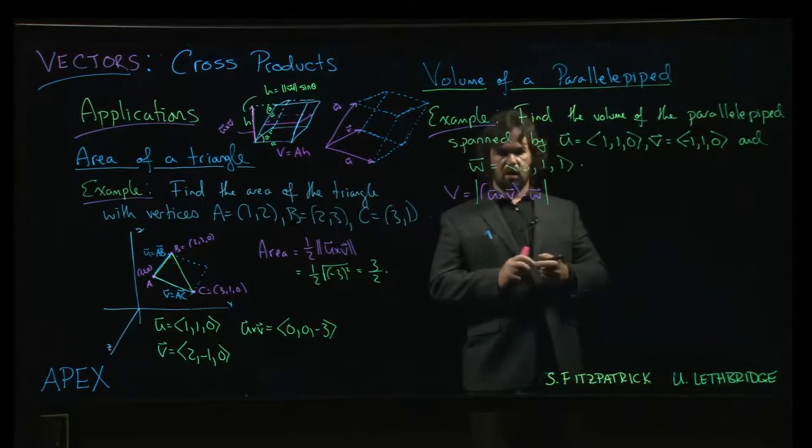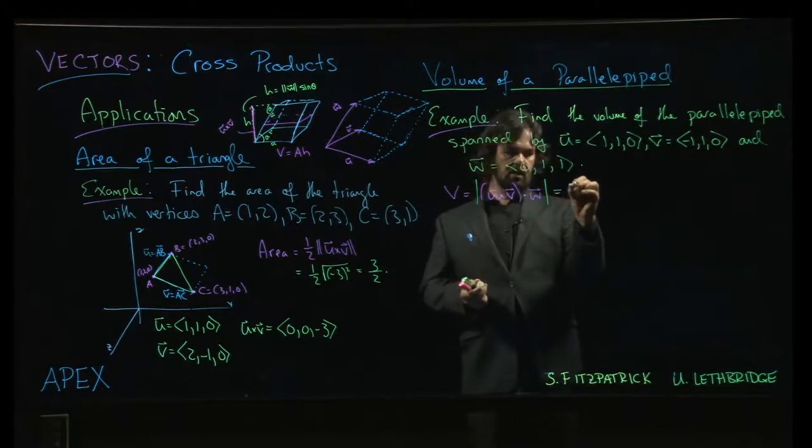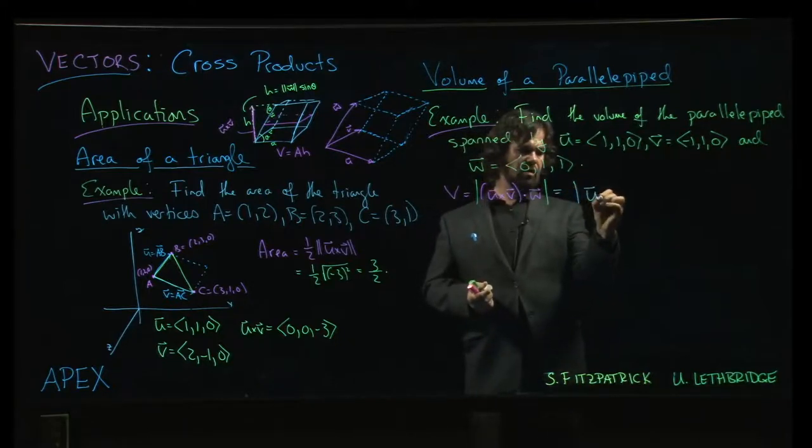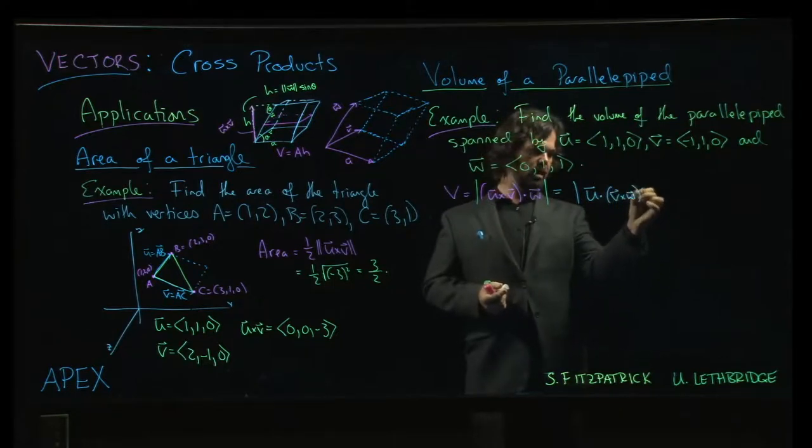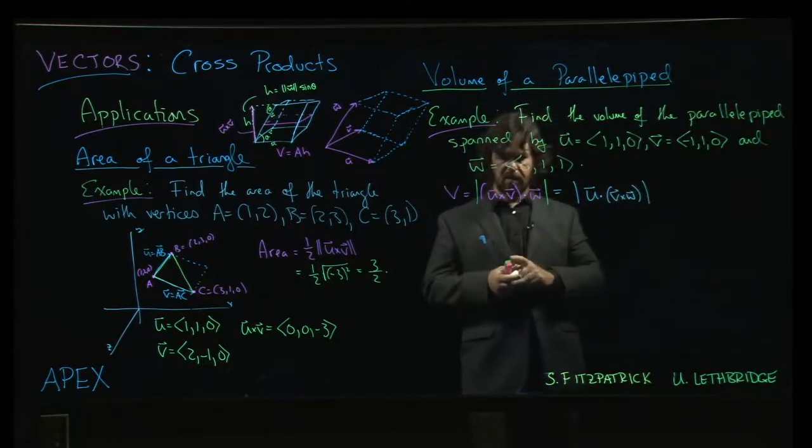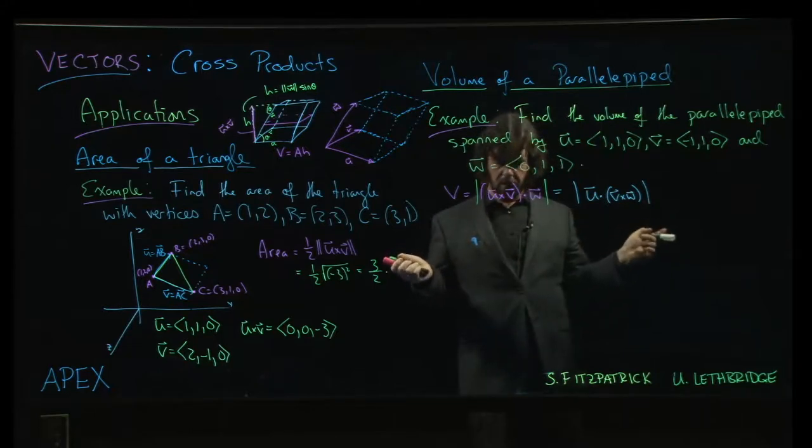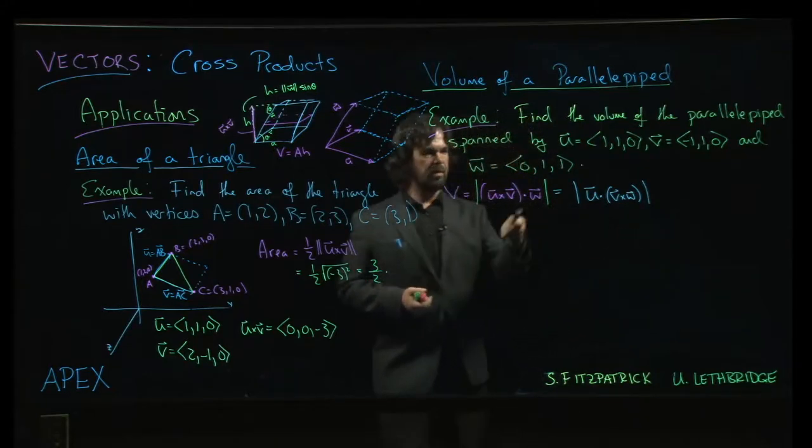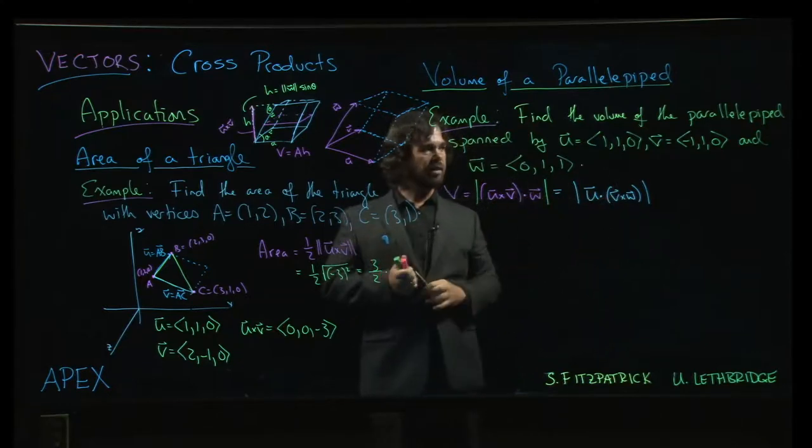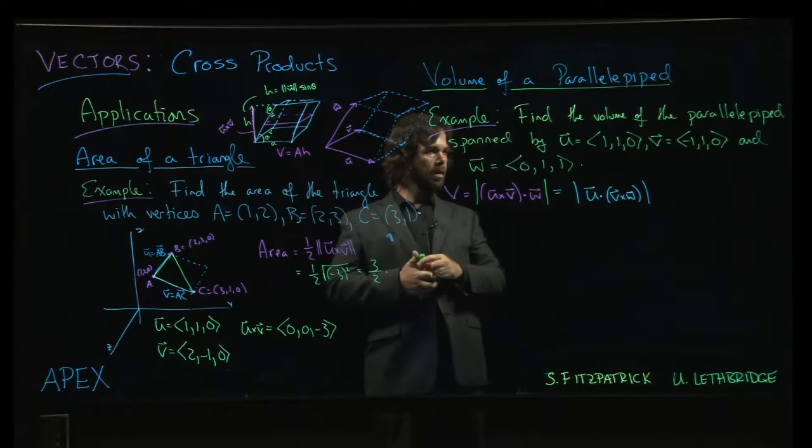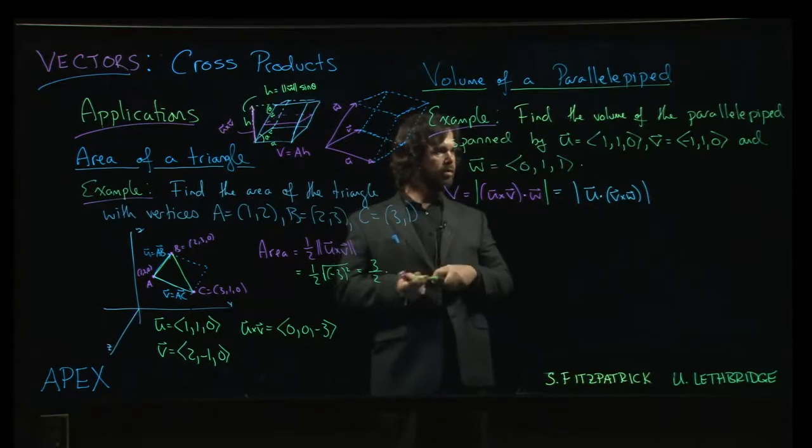So we can do it like that. Now you can also, if you want, as we had this as a property earlier, you could also do this as U dotted with V cross W. And it's up to you. Whichever way you want to do it, you'll get the same answer with either order. So why don't we do it the first way? I think the book does it that way, so I'll do it the other way. You can compare the two and see that you get the same answer.